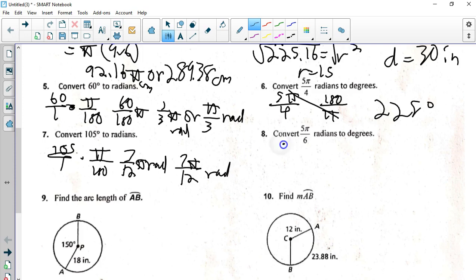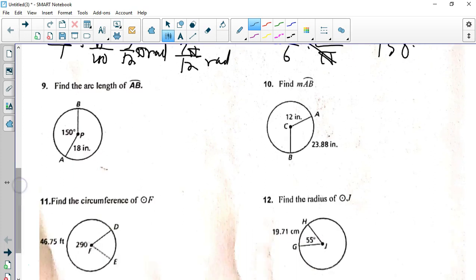Okay, going back to degrees. 5 pi over 6 times, we want the pi on the bottom to cancel. The 180 on the top. Those cancel. 5 times 180 divided by 6 is 150 degrees.